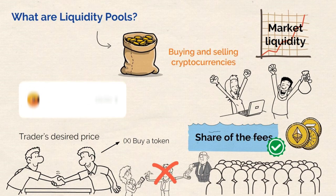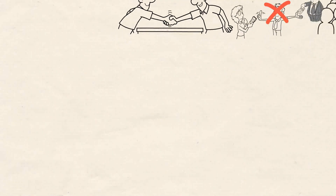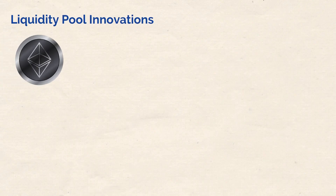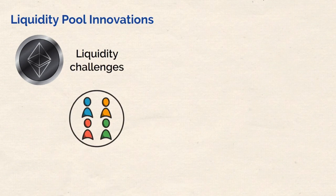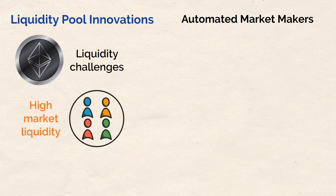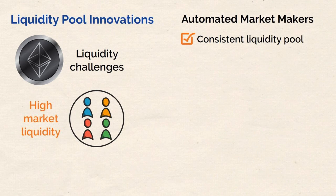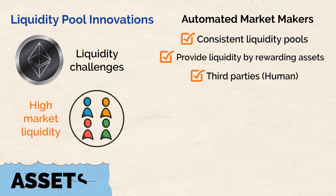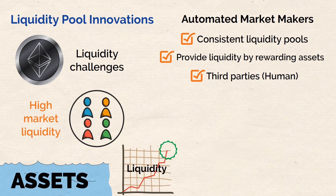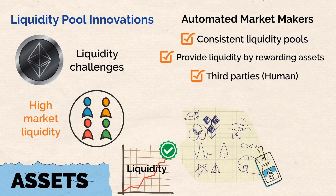It's the 21st century — haven't there been any improvements since Wall Street in the 20s? Decentralized exchanges on Ethereum used to face significant liquidity challenges in their early days. The limited number of buyers and sellers made it difficult to maintain high market liquidity. However, the introduction of automated market makers revolutionized the market by establishing more consistent liquidity pools. These automated market makers incentivized individuals and organizations to provide liquidity by rewarding them with assets for their contributions, all without requiring human intervention from third parties. The larger the pool of assets, the greater the level of liquidity, making trading on exchanges easier. The automatic market maker algorithm adjusts the price to guarantee that the pool always has enough liquidity, regardless of the trade size.